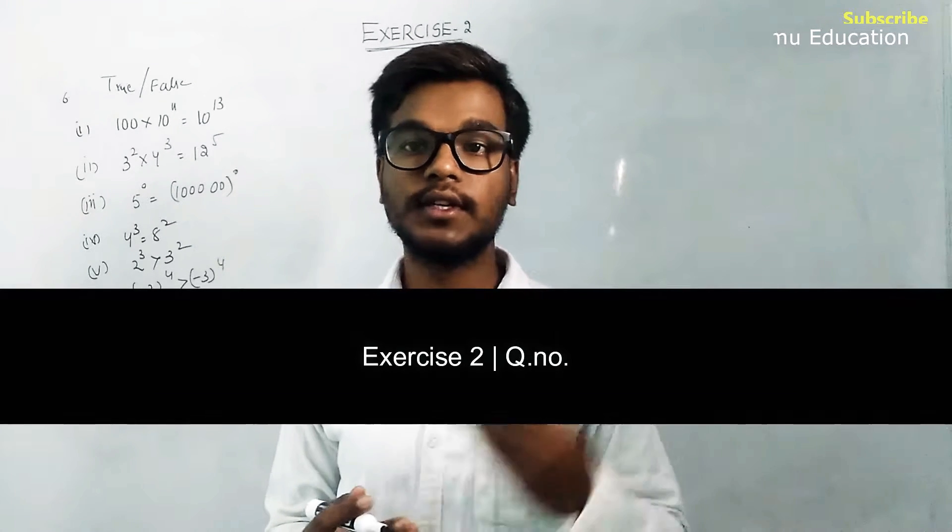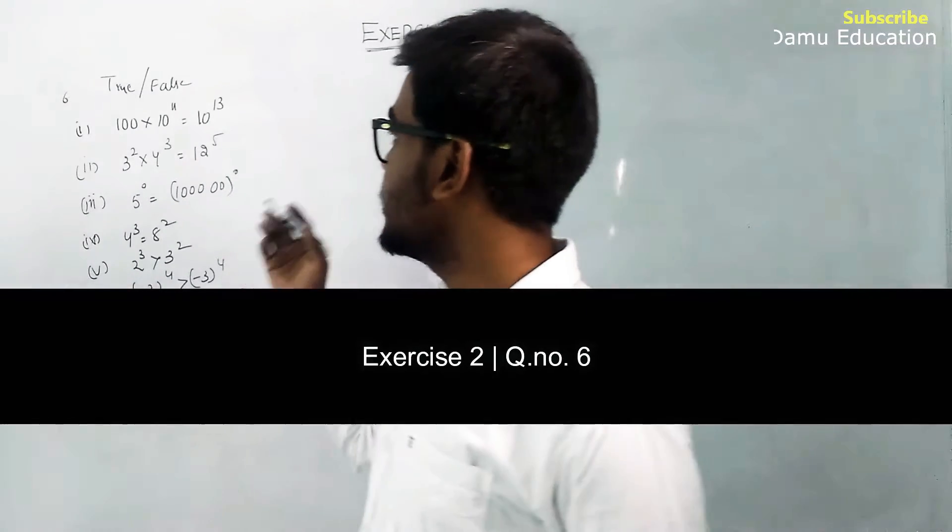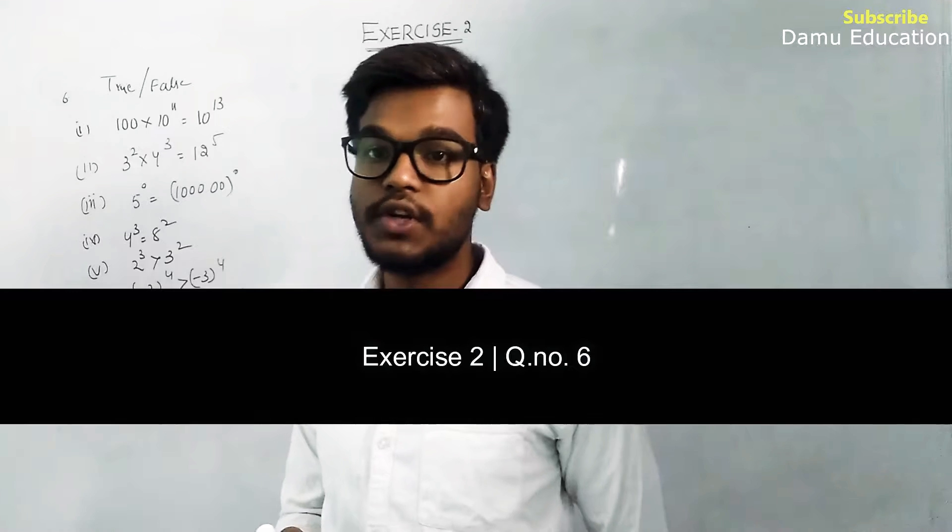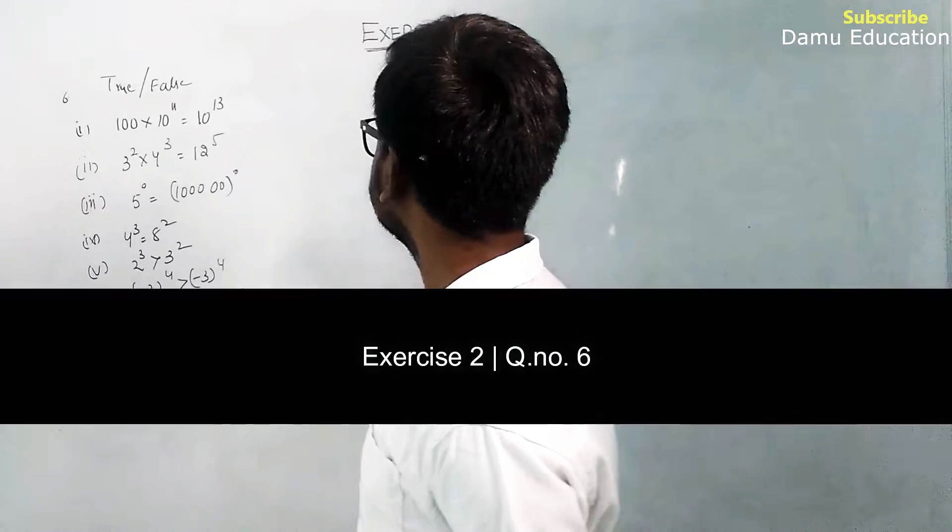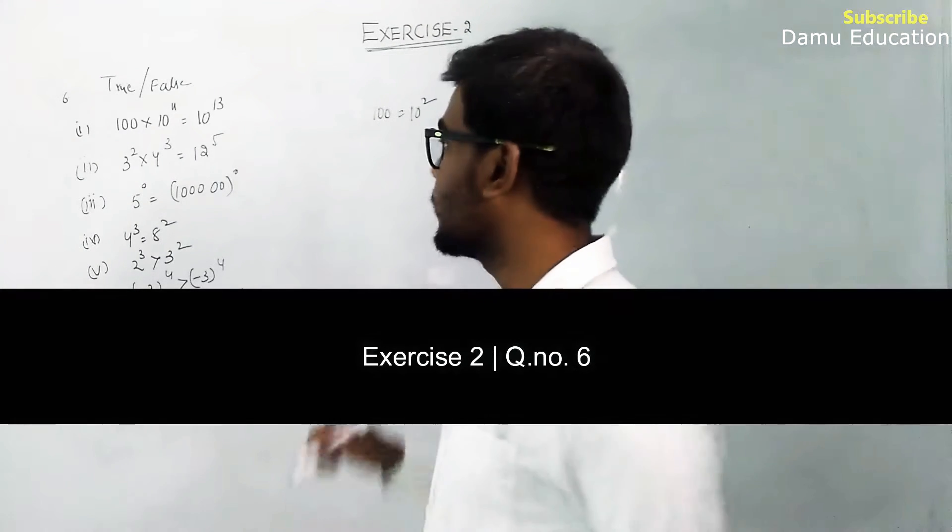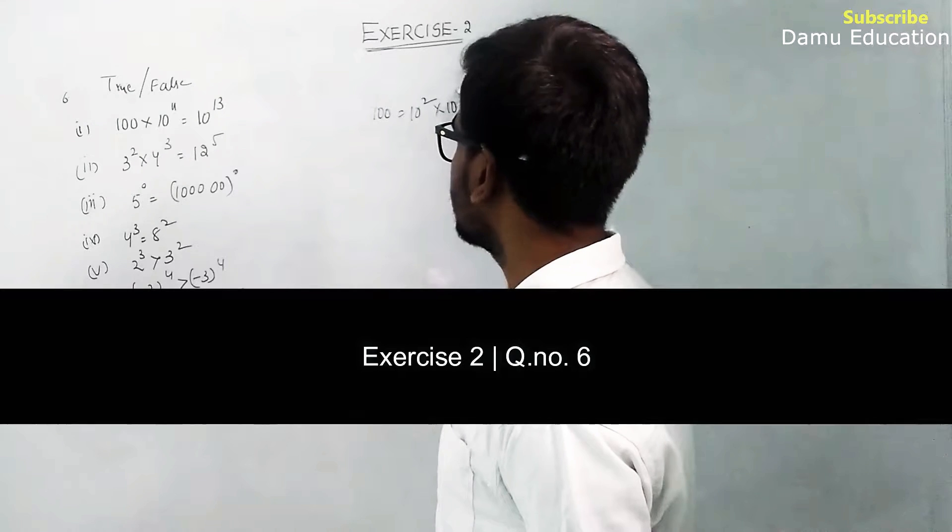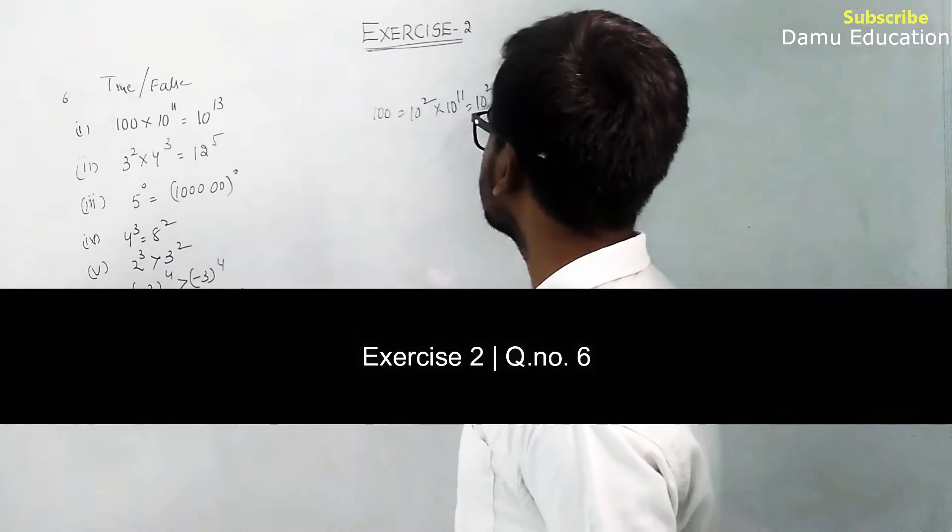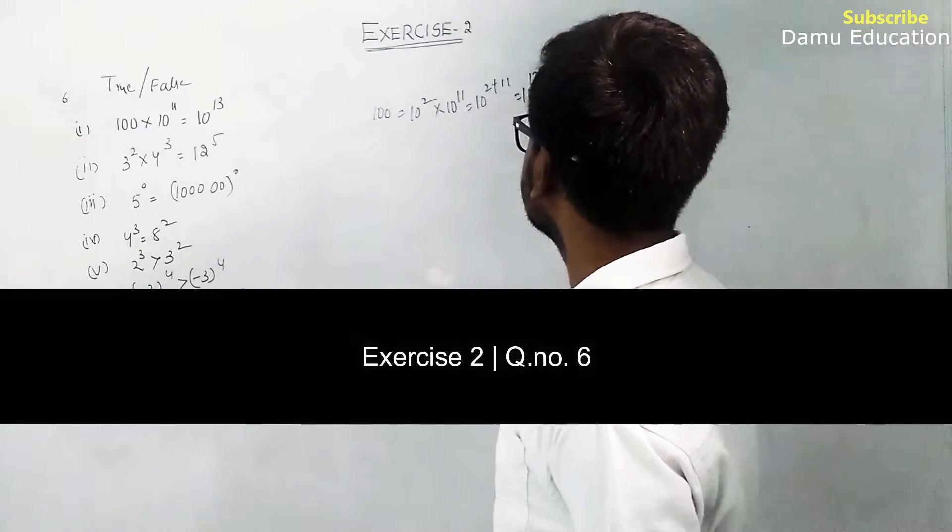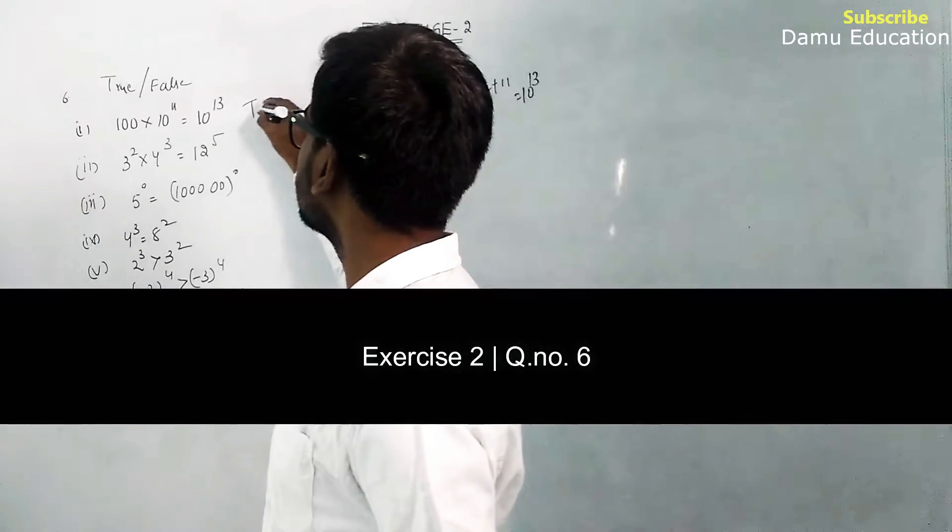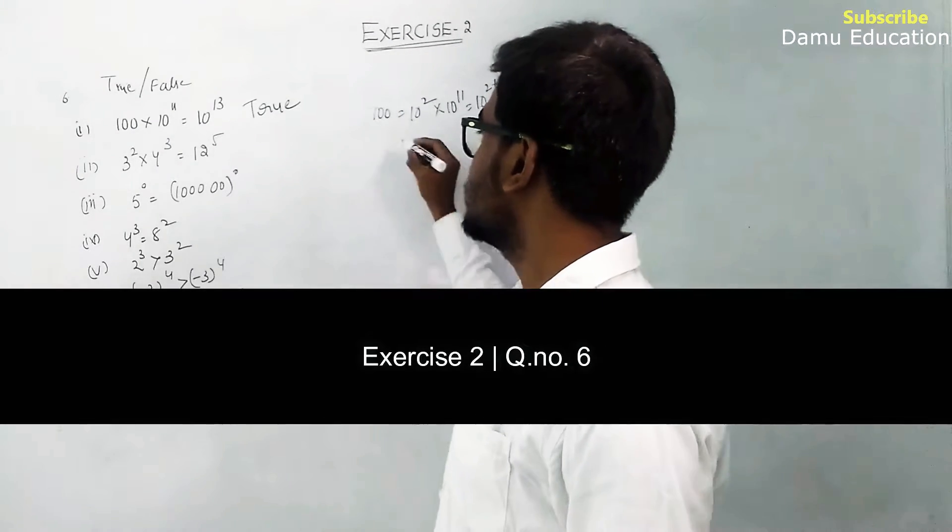Here, 10^100 × 10^11 will equal 10^113. 100 can be written as 10². That will equal 10^11. Using the rule a^m × a^n = a^(m+n), we get 10² × 10^11 = 10^13. So it will be true. The first one is true.